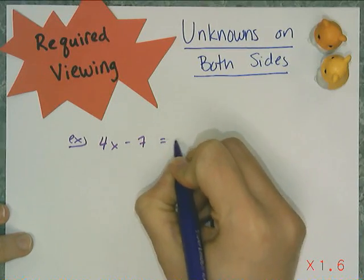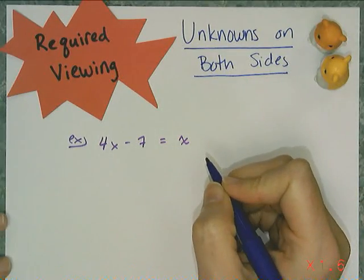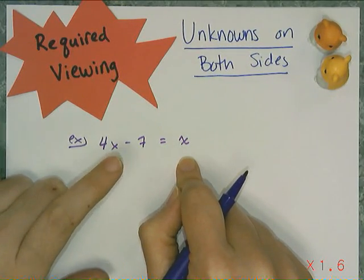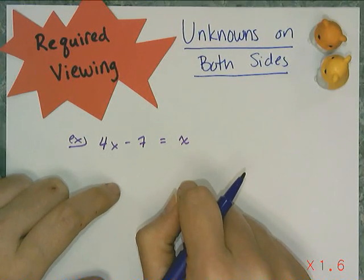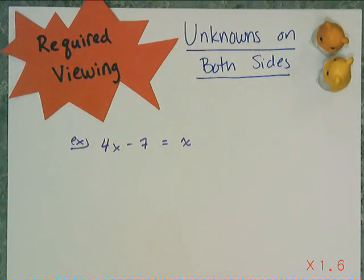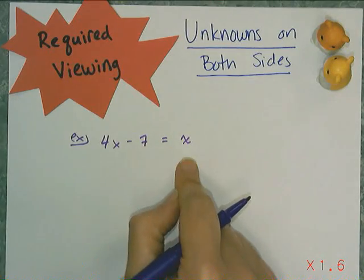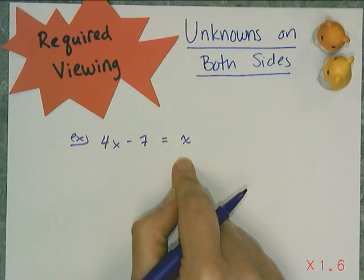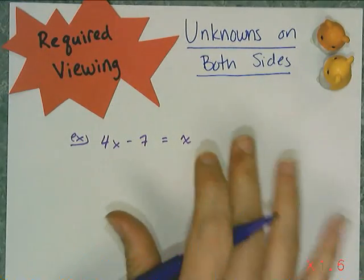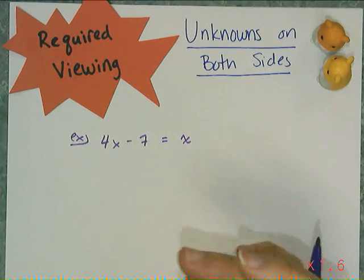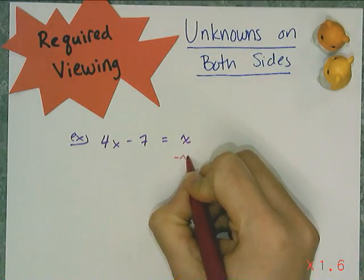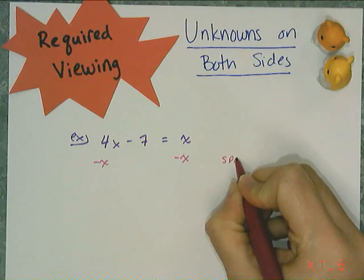First things first, let's write an equation down. The way to deal with the unknown appearing on both sides is just to use either the addition or subtraction property of equality. I'm going to add or subtract off the term with the variable to one side. So I see I have 4x minus 7 equaling x, and I want to move this x to that side. I can only use the properties of equality, so I'm going to use the subtraction property of equality and subtract x from both sides.